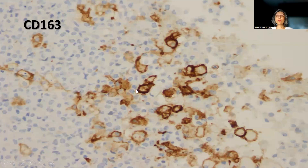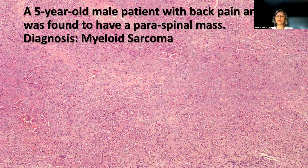CD163 was ordered to look for the content of macrophages or monocytes, which are seen in a subset of AMLs or myeloid sarcomas, especially the ones that tend to form soft tissue masses. The final diagnosis of this case is myeloid sarcoma. Of course, the patient had to undergo blood and bone marrow examination to prove or disprove the presence of a leukemia component to the myeloid sarcoma.